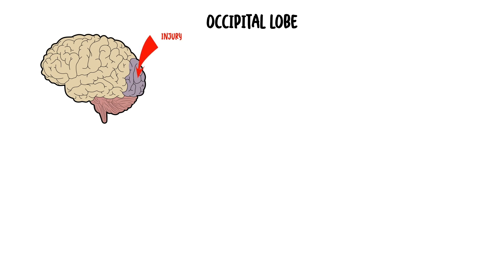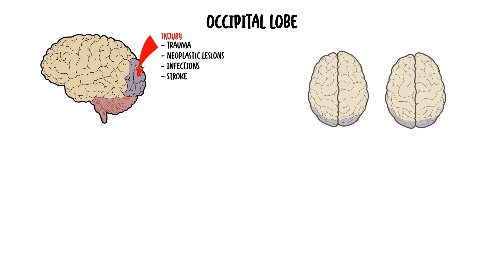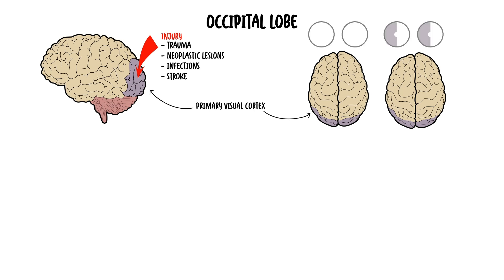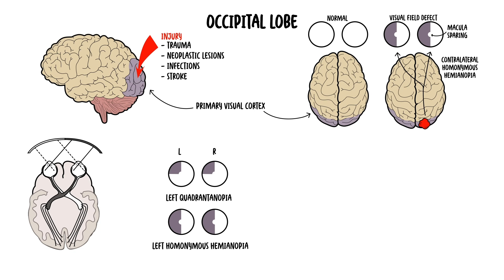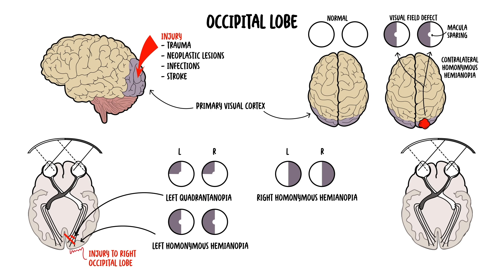Common causes of injury to the occipital lobe are trauma, neoplastic lesions, infections, and stroke. Because the occipital lobe contains the primary visual cortex, injury presents with visual defects, such as contralateral homonymous hemianopia sparing the macula specifically. Quadrantanopia can also occur, which is the loss of vision in one of the quarters of the visual field. Here is someone with right-sided occipital injury resulting in left quadrantanopia. Injury here results in left homonymous hemianopia sparing the macula. Visual field loss with the macula being impaired occurs in injury to the left parietal lobe.